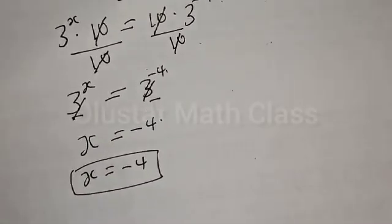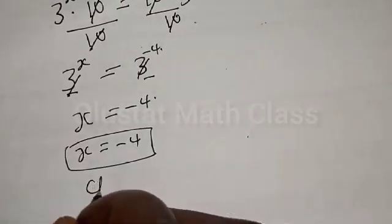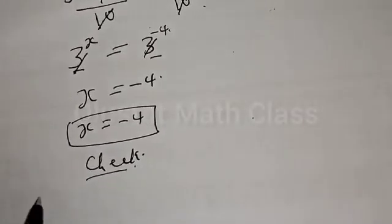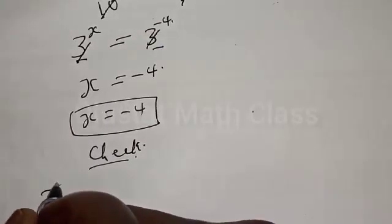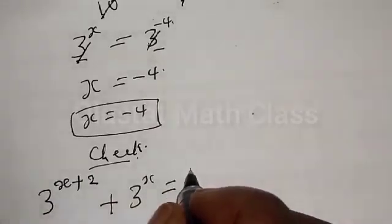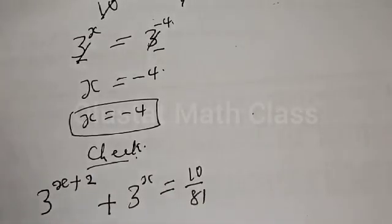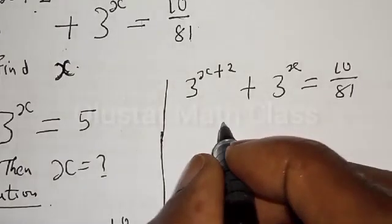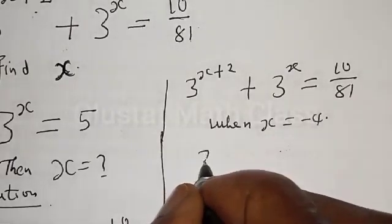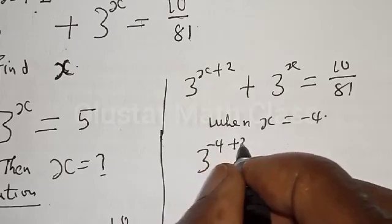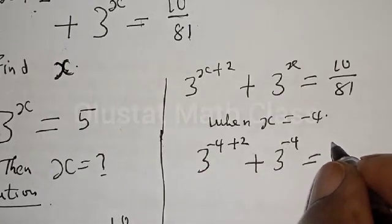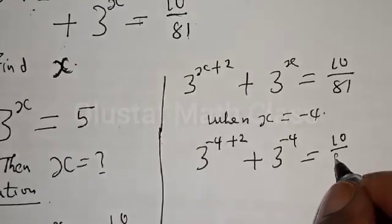Let's check to confirm if our answer is right or wrong. We have the equation: 3 to the power x+2 plus 3 to the power x must equal 10 divided by 81. When x is equal to minus 4, we have 3 to the power (minus 4 plus 2) plus 3 to the power minus 4, which must equal 10 divided by 81.